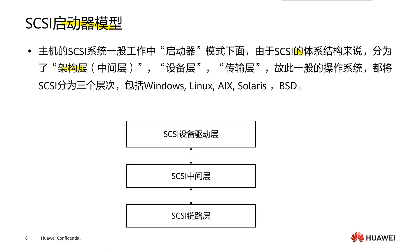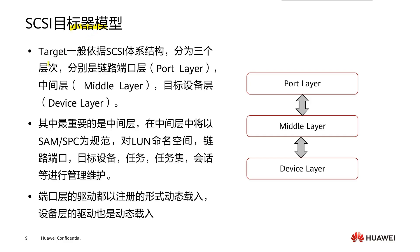The SCSI initiator model is divided into three architecture layers: architecture layer, device layer, and transmission layer. General operating systems such as Windows, Linux, and AIX all divide SCSI into these three levels. For the SCSI initiator under AIX, these are: SCSI device driver layer, SCSI middle layer, and SCSI link layer. The SCSI target model is also divided into three levels: link port layer, middle layer, and target device layer. The link port layer's main task is to unpack and pack SCSI instructions carried on the link. The target device layer is an analyzer of SCSI instructions.